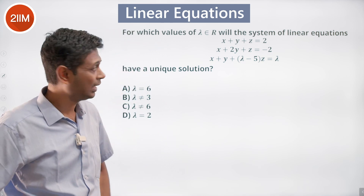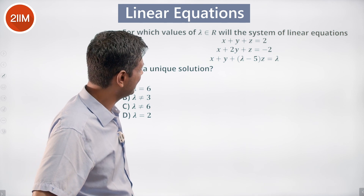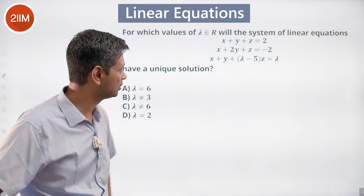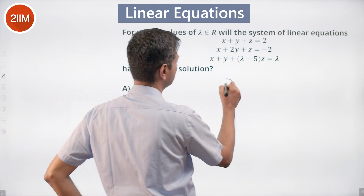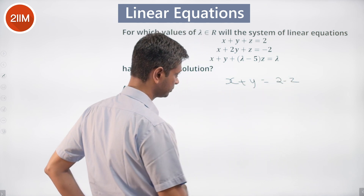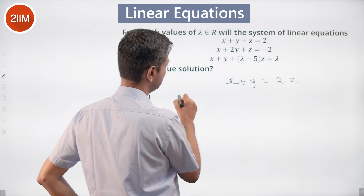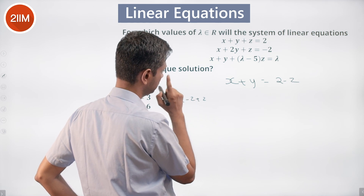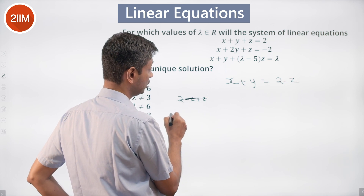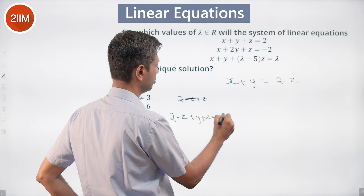Starting with x plus y plus z equal to 2 and x plus 2y plus z equal to minus 2: from the first equation, x plus y equals 2 minus z. Substituting into the second equation gives (2 minus z) plus y plus z equal to minus 2, which simplifies to 2 plus y equals minus 2.